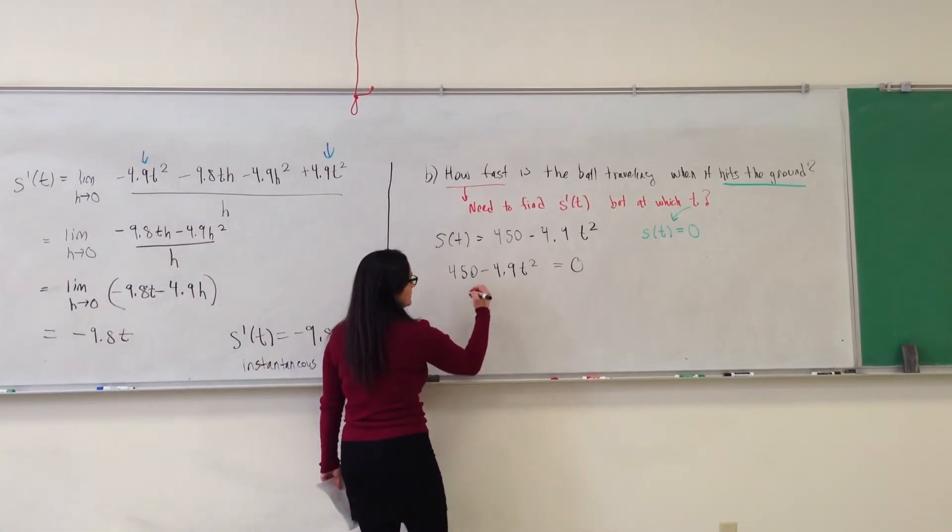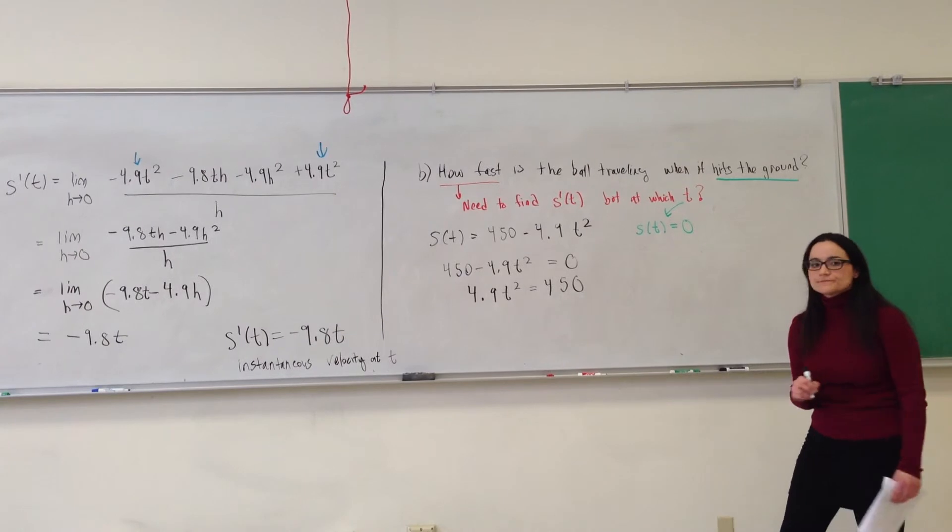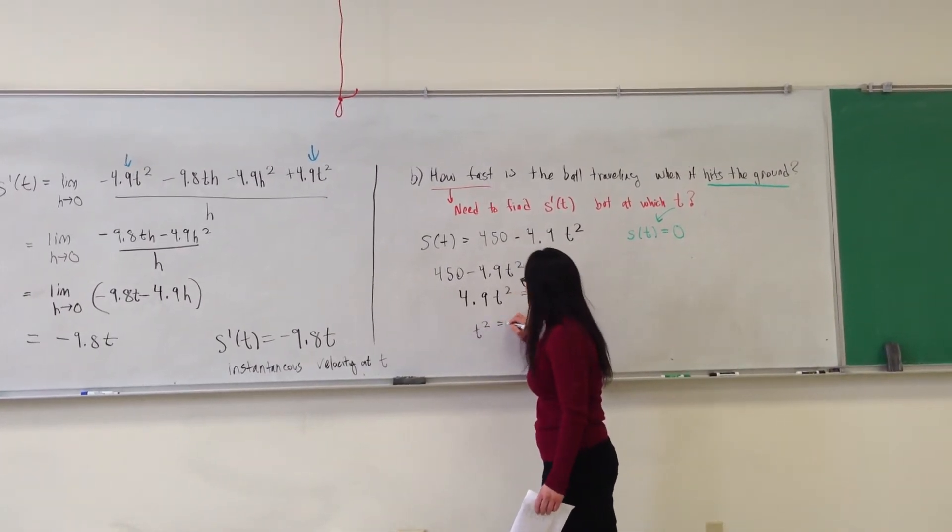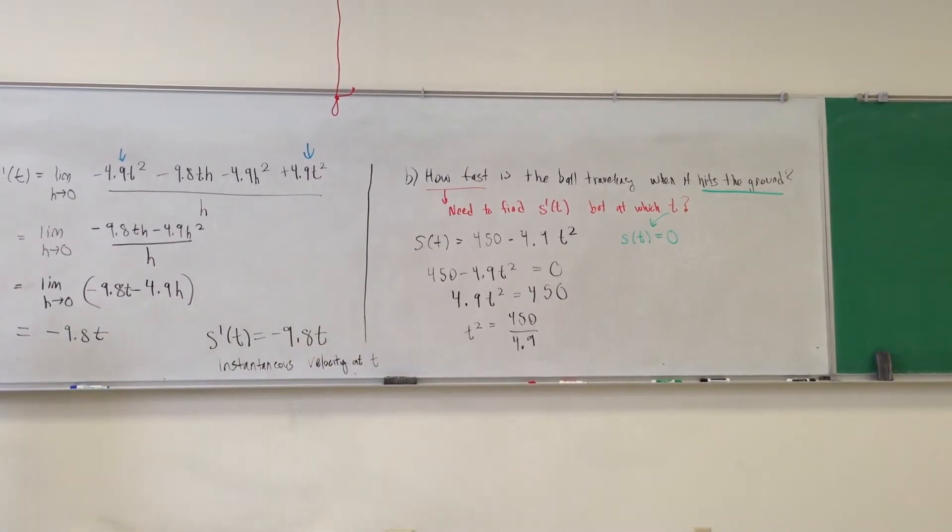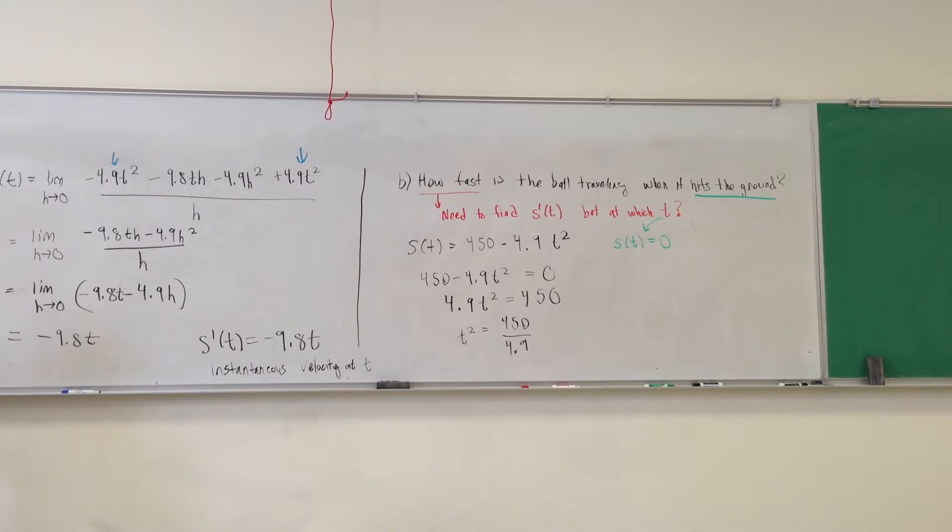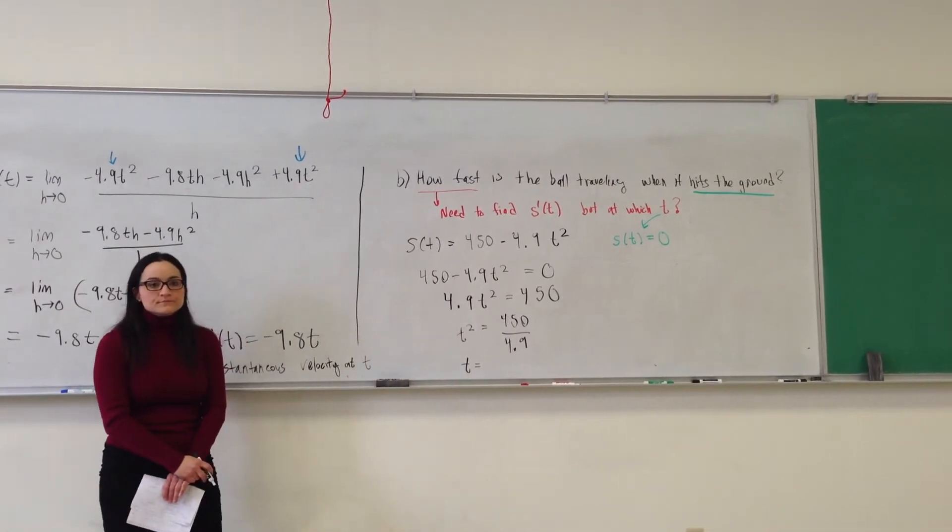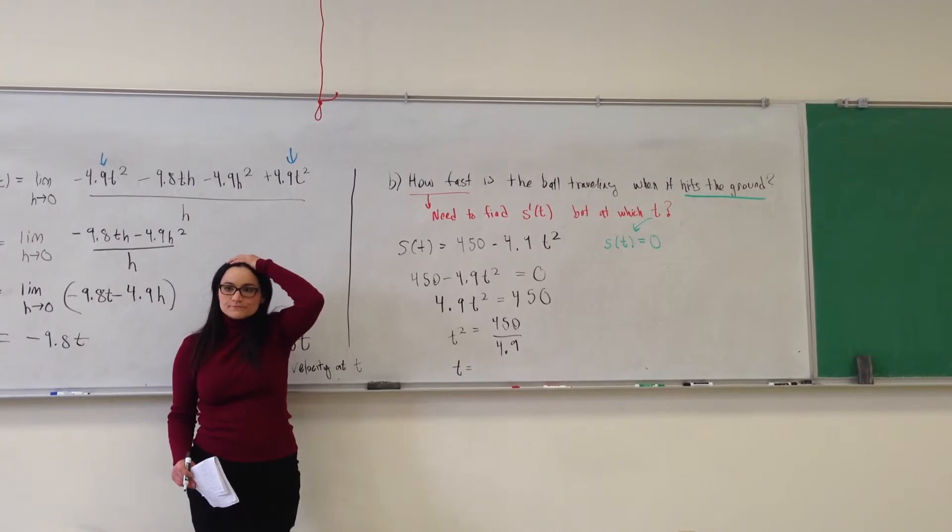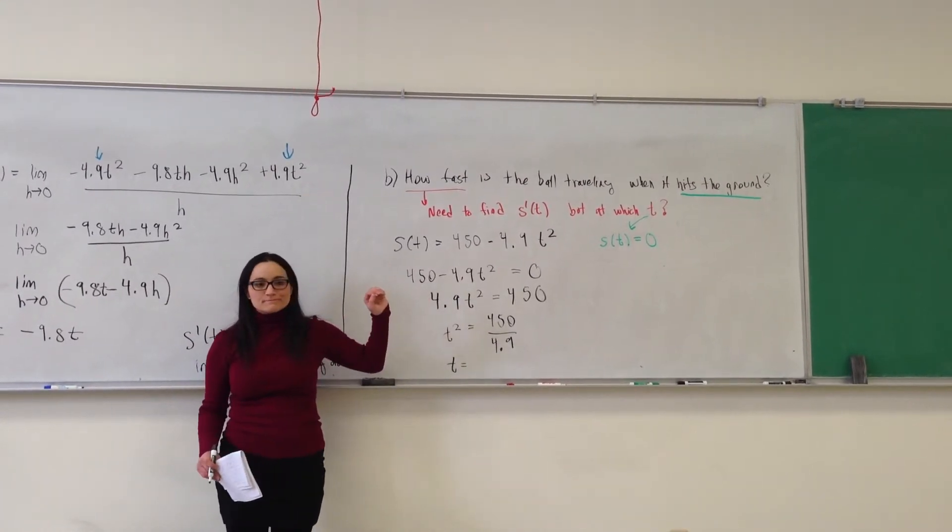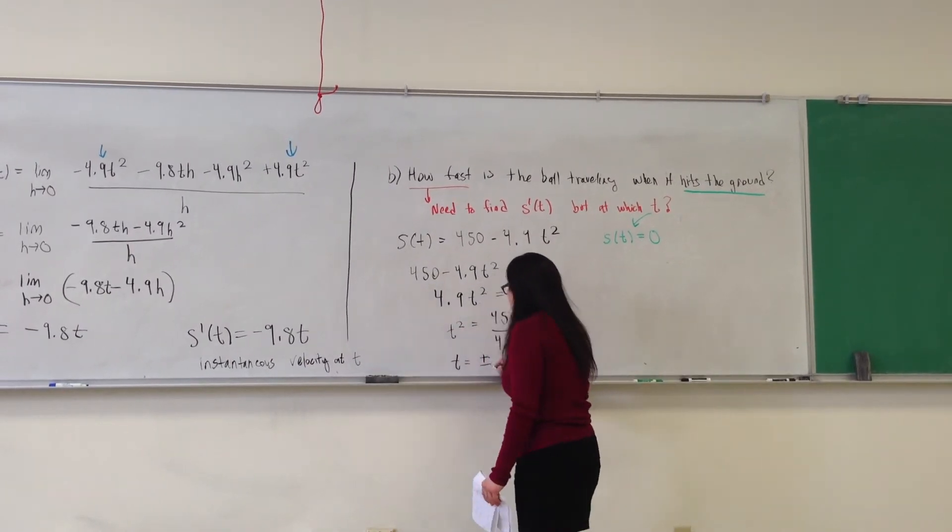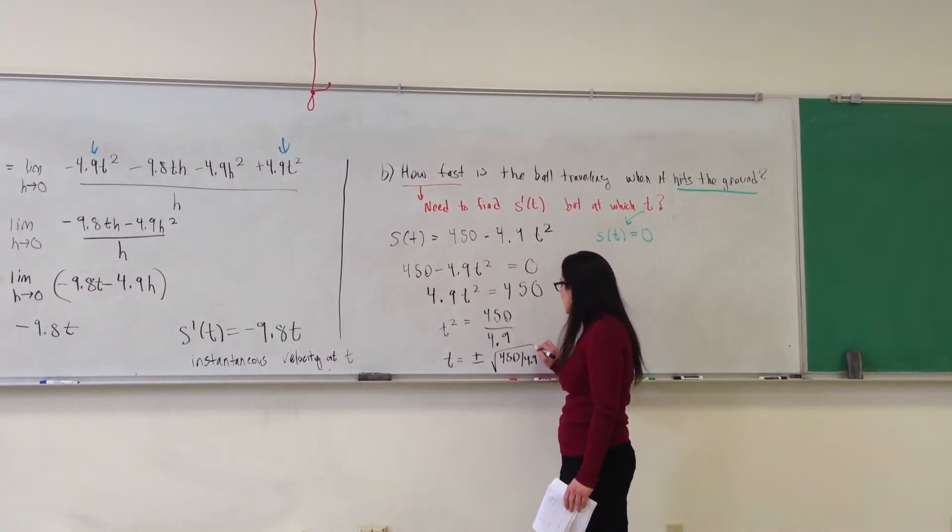So solving for t, bringing the t to the other side, I have 4.9 t squared equals 450. Or t squared is 450 divided by 4.9. And so what is t? In general, how would you solve this equation? You take the square root. And how many solutions are there to the equation t squared equals some number? Two. There's the positive and the negative solutions. In general, we would have t is equal to plus or minus the square root of 450 divided by 4.9.